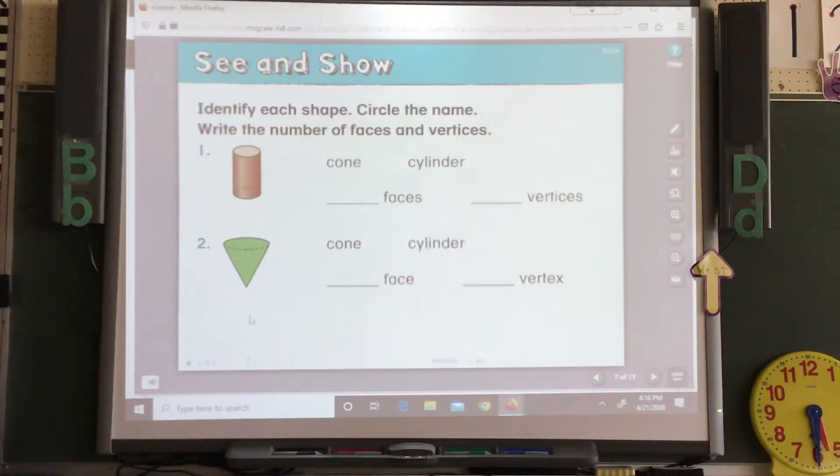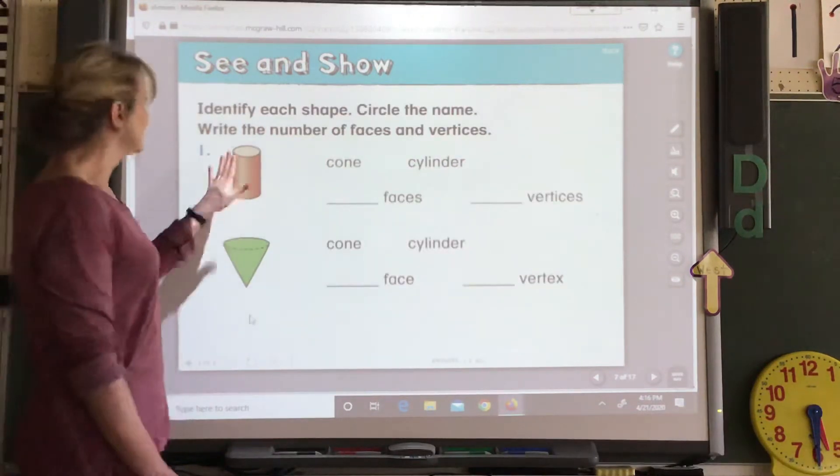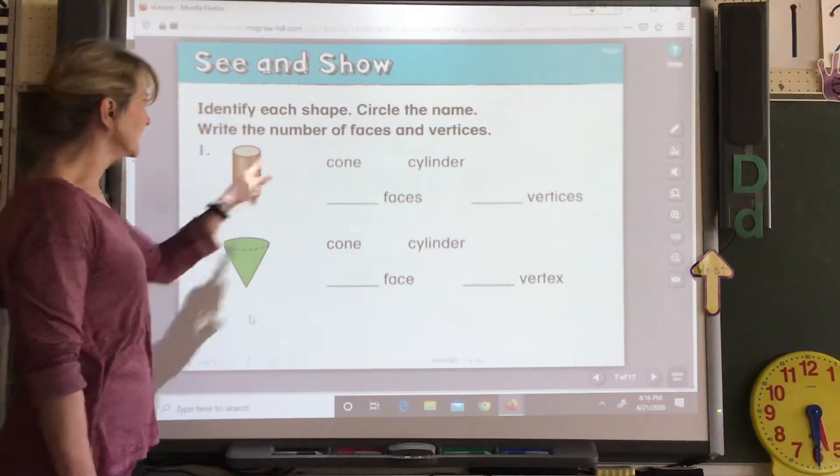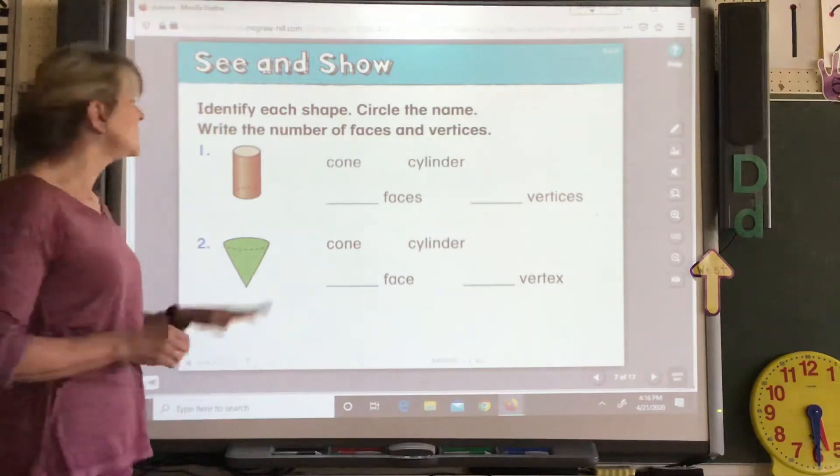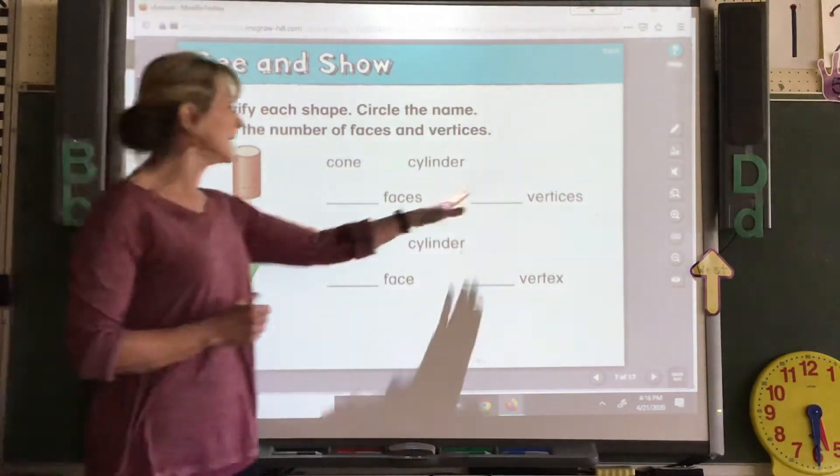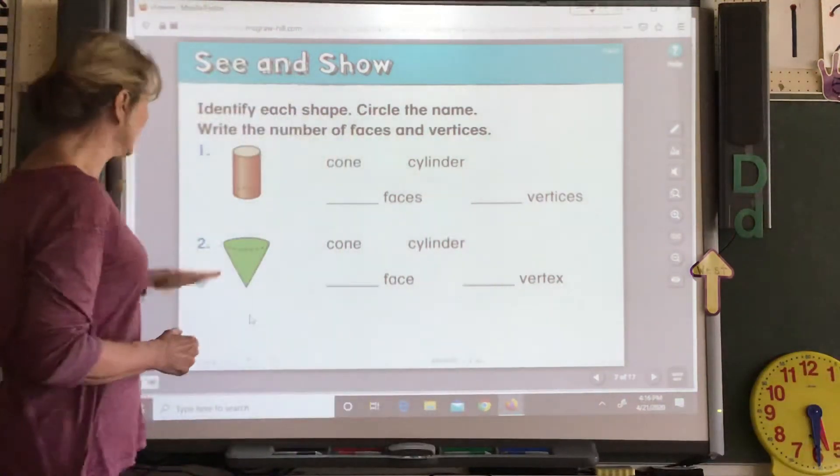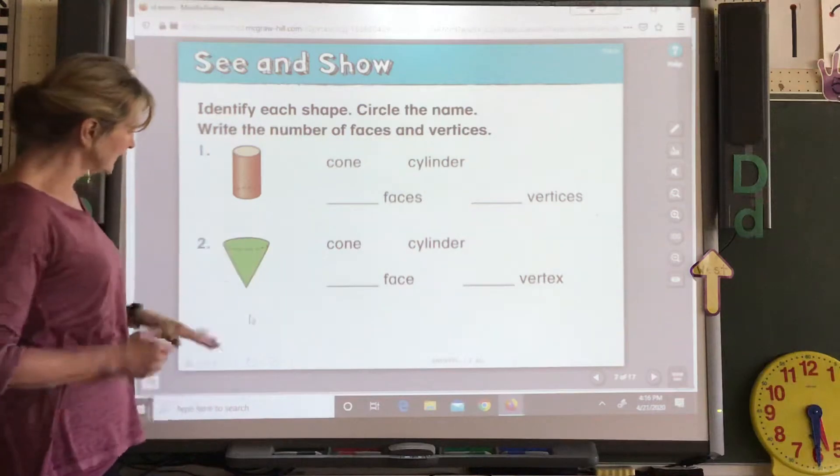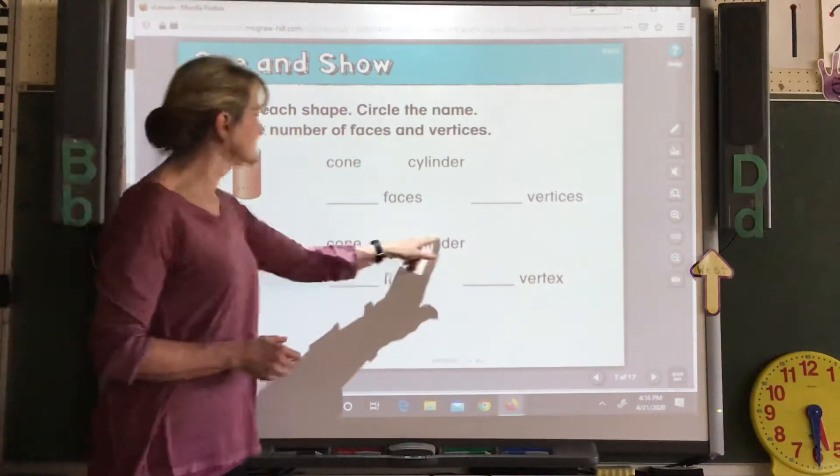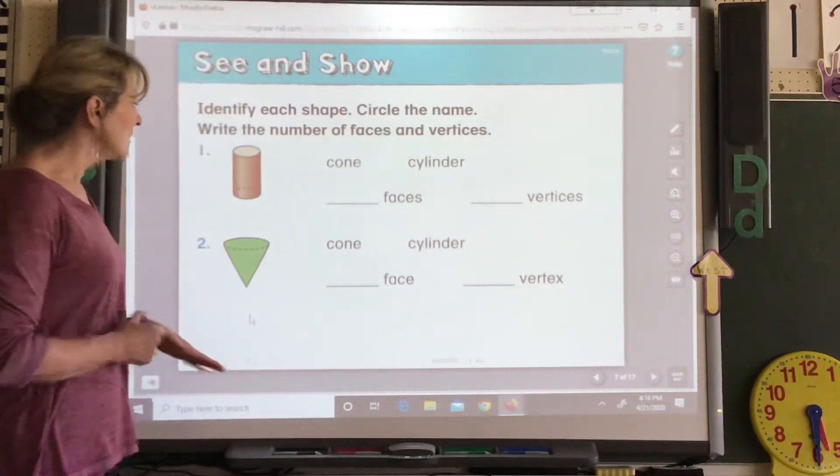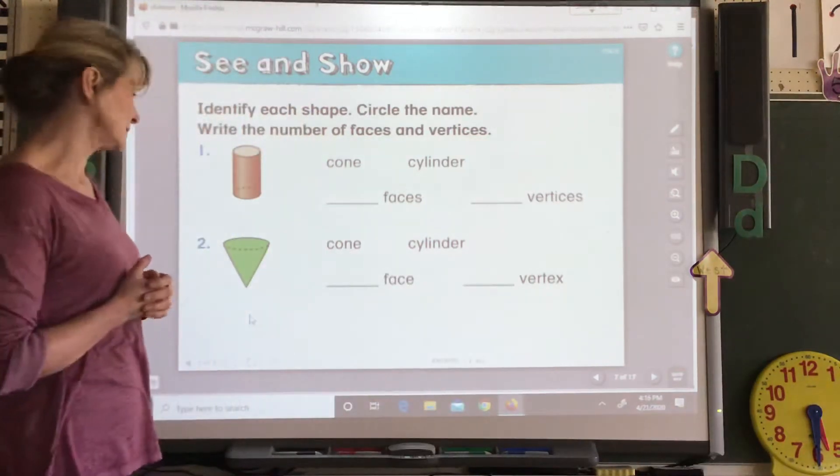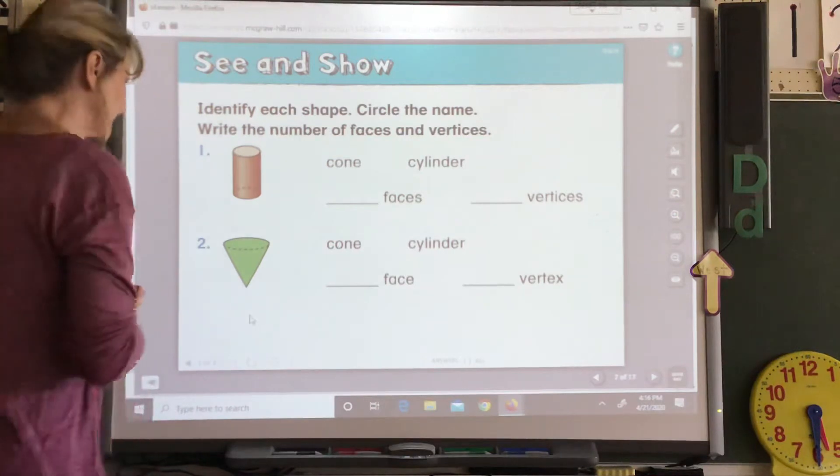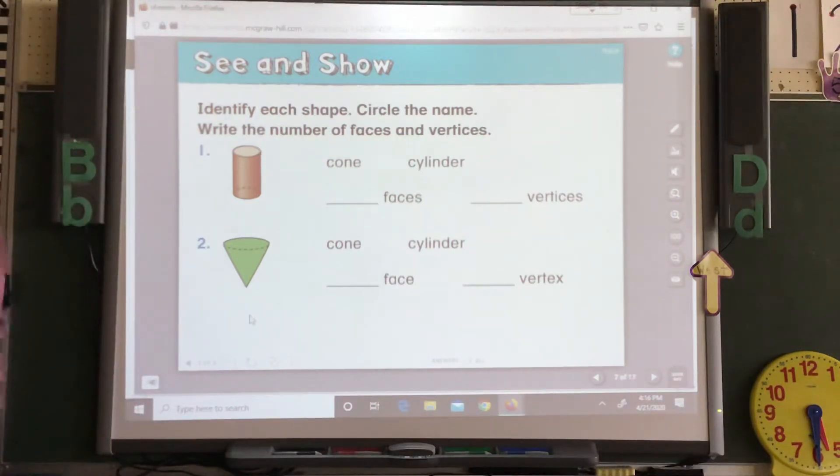And that's what they want you to do here. Look at this shape. Is it a cone or a cylinder? Circle the right one. Write how many faces and how many vertices. Look at this shape. Is it a cone or is it a cylinder? Write how many faces a cone has and how many vertices or vertex does it have. All right. Flip it over.